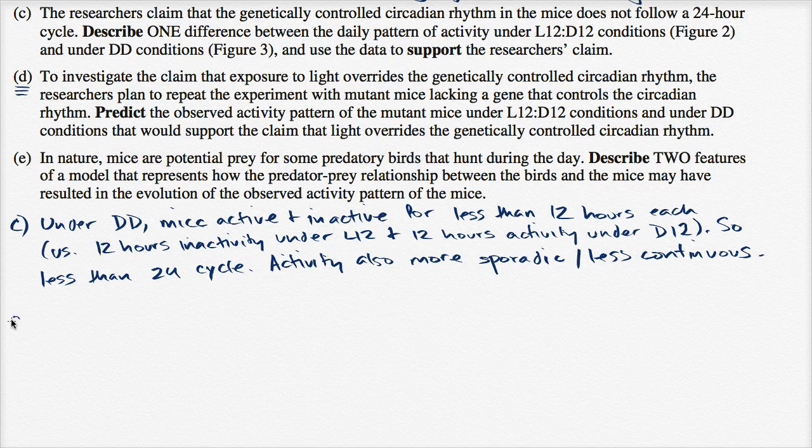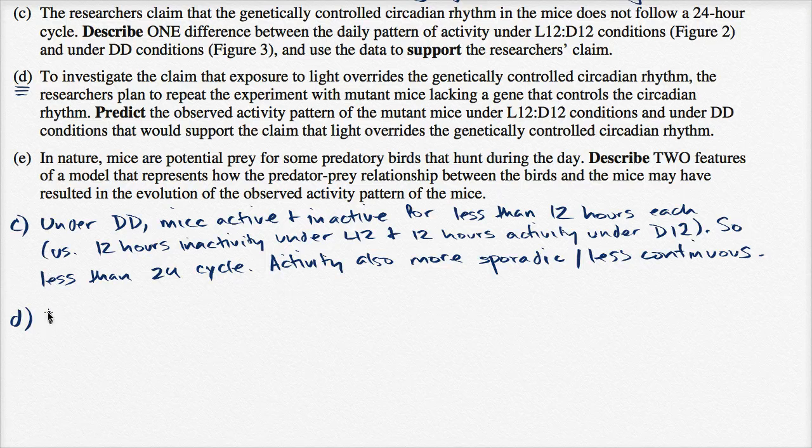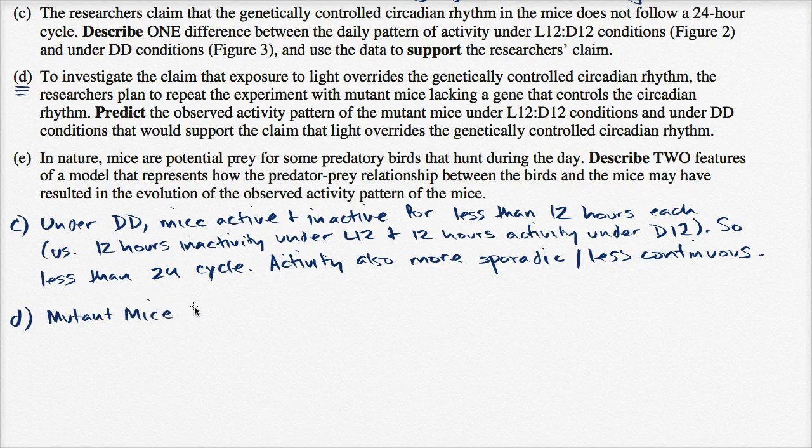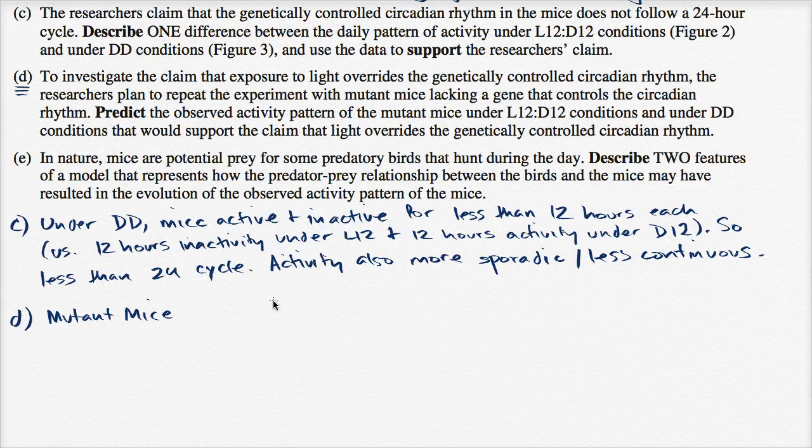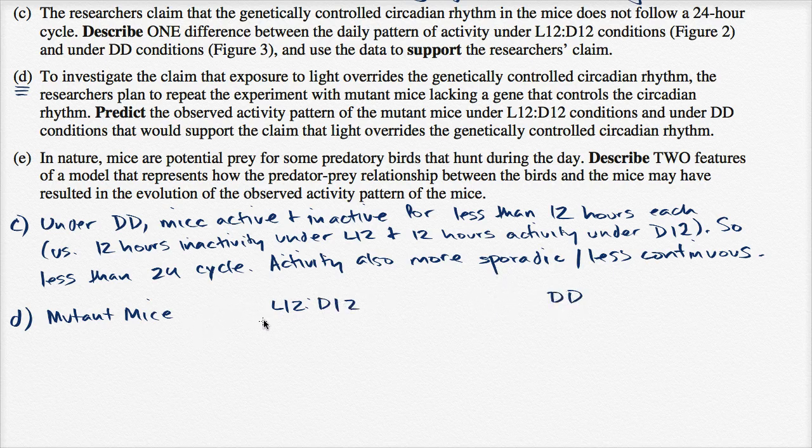Alright, so let me write this down. So part D. So under, so mutant mice, mutant mice under, so let me make two columns. Mutant mice under L12D12 and then under continuous darkness. What would I expect?